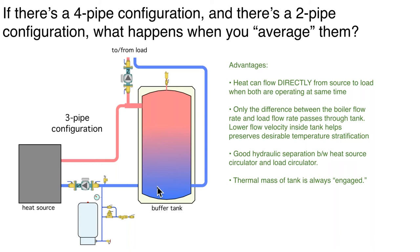So if you're going to control the heat source based on room thermostats rather than tank temperature, don't do a two-pipe — do a three-pipe buffer. We can still get good hydraulic separation with this.